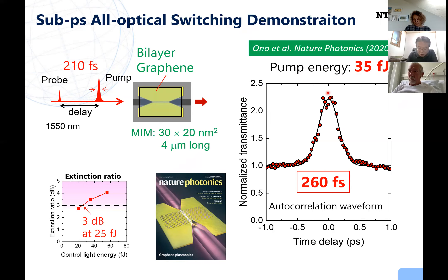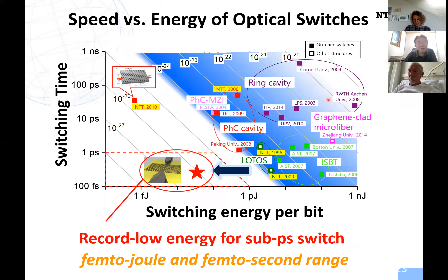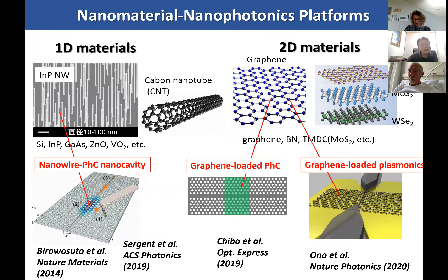As a total, this corresponds to record-low switching energy for a sub-picosecond switch. As far as we know, this is the first demonstration in the femtojoule and femtosecond range switching operation. This is a very good example of a nanomaterial nanophotonics platform. We are working on several different platforms for nanomaterial nanophotonics, and we think this combination is a very good platform for making very energy-efficient nanophotonic devices.